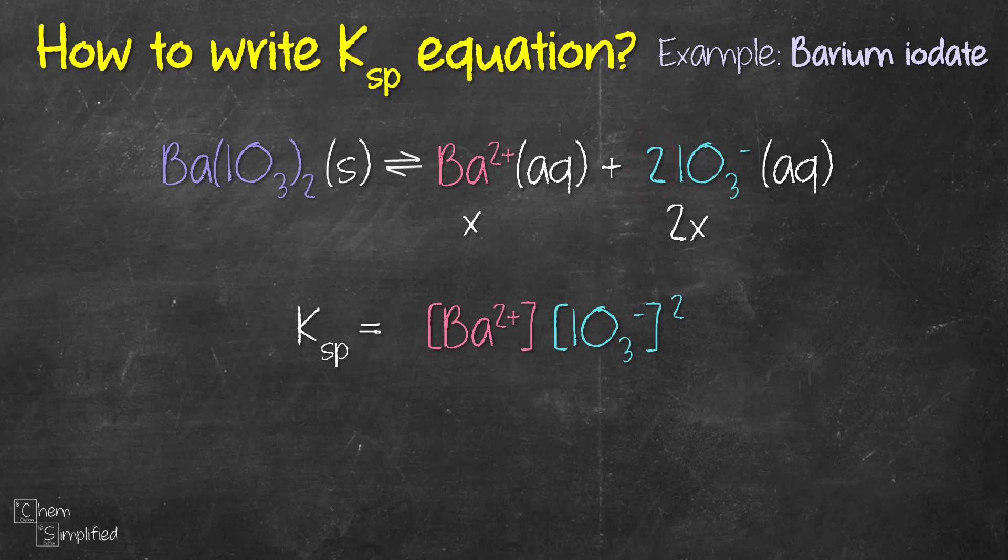So now if we were to plug that into our Ksp expression, we're going to get x for barium ion and 2x for iodate. Now this is the part that you need to pay attention because in our Ksp expression we have iodate ion concentration to the power of 2, right? That 2x has to be raised to the power of 2. So therefore the entire Ksp equation is going to be equal to 4x to the power of 3.